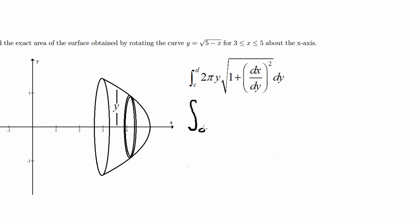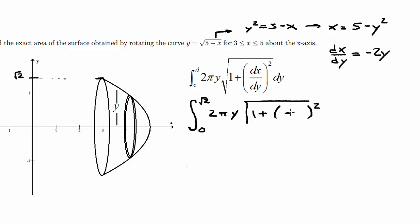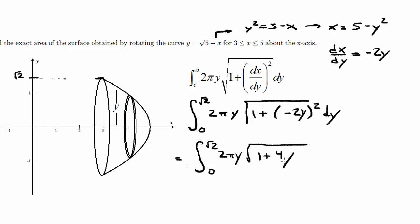Now we're going to do it with the other version of the formula, where we're in terms of y. We start with the integral from 0 to root 2 — the top bound is found by plugging x equals 3 into the function to get root 2. We have 2π times y, and since we're in terms of y we keep y directly. That's the square root of 1 plus (dx/dy) squared. Solving for x gives x equals 5 minus y squared, so dx/dy equals negative 2y. Substituting that in with dy gives the integral from 0 to root 2 of 2π y times root of (1 plus 4y squared) dy.